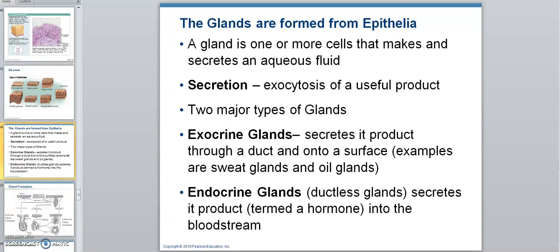We're back to epithelia, but this time we're talking about the glands. Epithelia is responsible for formation of the glands. A gland is one or more cells that secrete. A secretion is when you put a useful product out from a cell. Remember excretion and secretion from chapter one: excretion is putting a wasteful product out, secretion is a useful product, like a hormone or something.